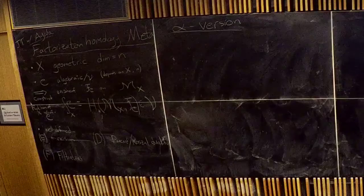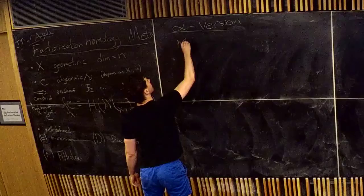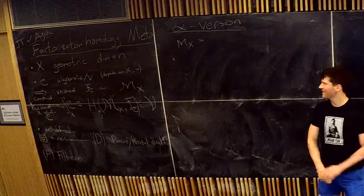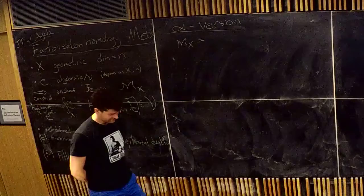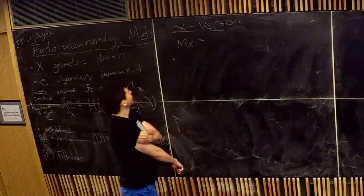Now I'm going to go through this recipe in more detail in the alpha version and then the beta version. In the alpha version, the fundamental difference between the two is what M_X is. In the alpha version, M_X is known as the Ran space of X. The idea to use the Ran space in this way is an idea of Beilinson and Drinfeld.